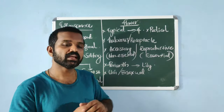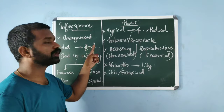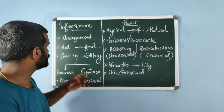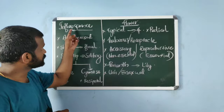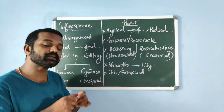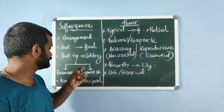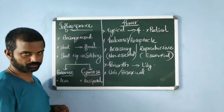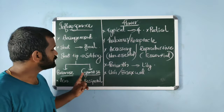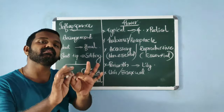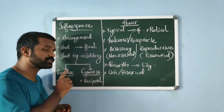Inflorescence is the arrangement of flowers on the floral axis. A flower is a modified shoot — the shoot apical meristem changes to a floral meristem during flower formation. When a shoot tip transforms into a flower it is always solitary. Based on whether the apex terminates in a flower or not, inflorescence is of two types: racemose, where the apex continues to grow and does not terminate in a flower; and cymose, where the apex terminates in a flower. In racemose inflorescence, flowers are arranged in acropetal manner.